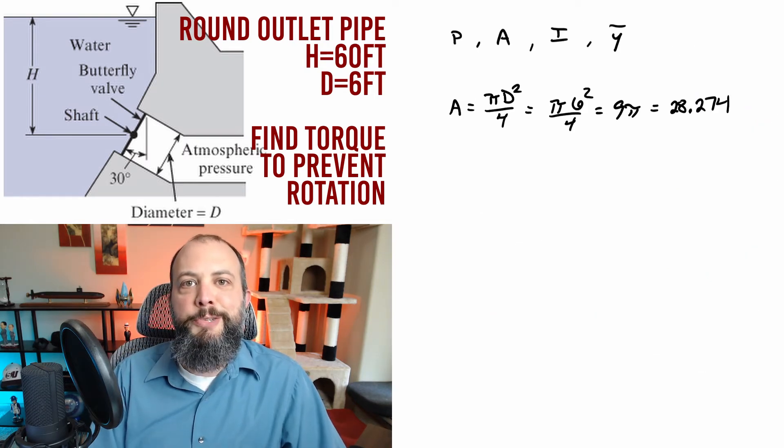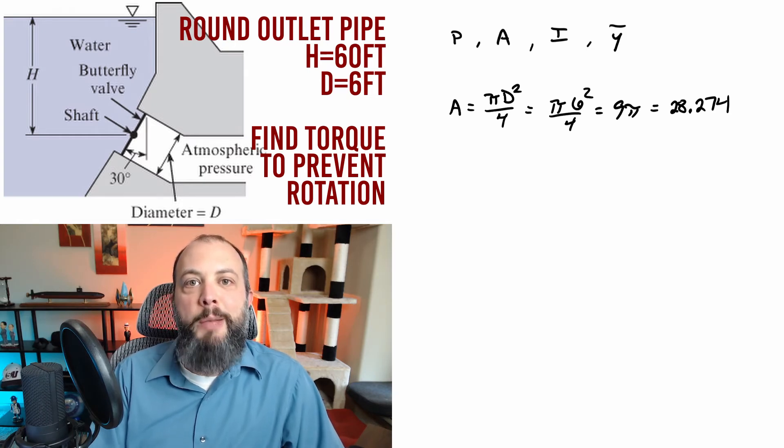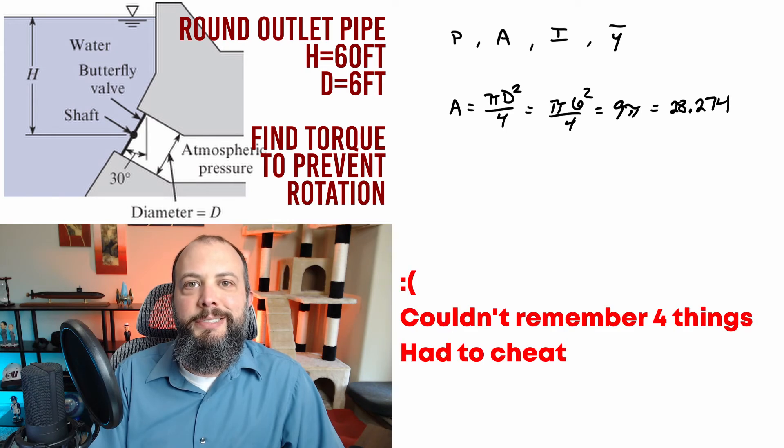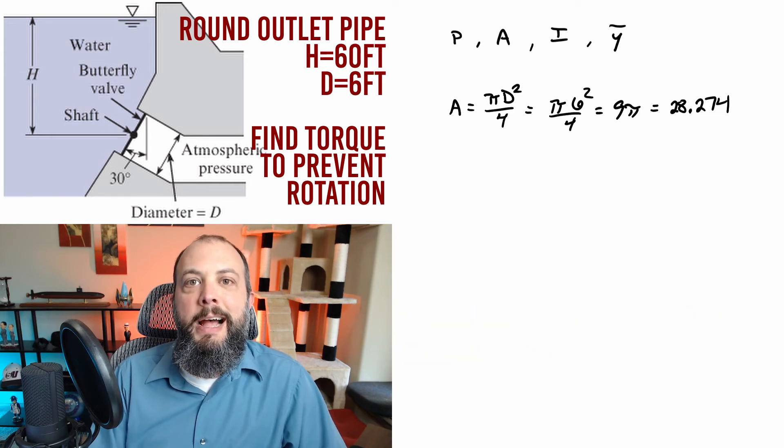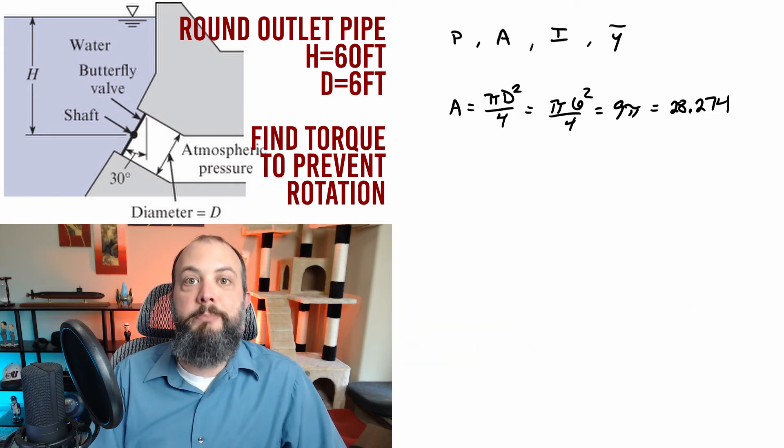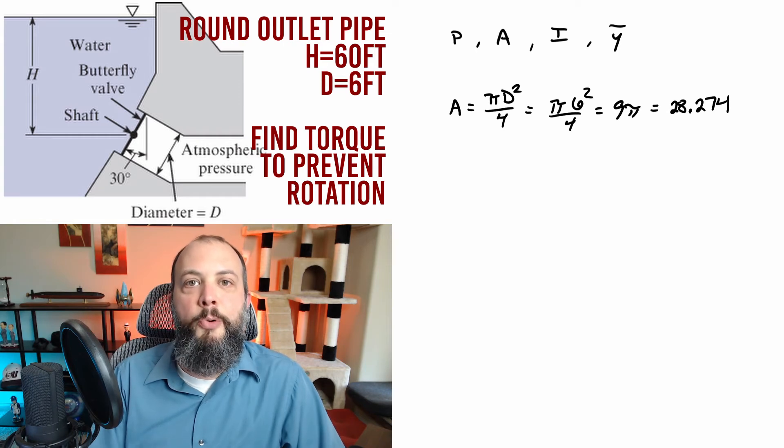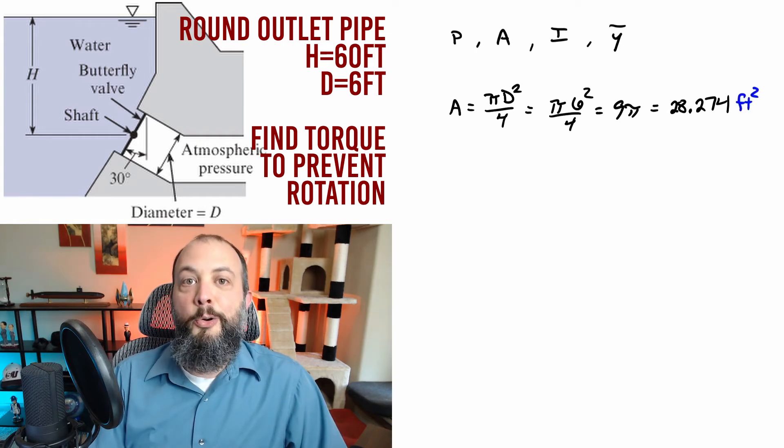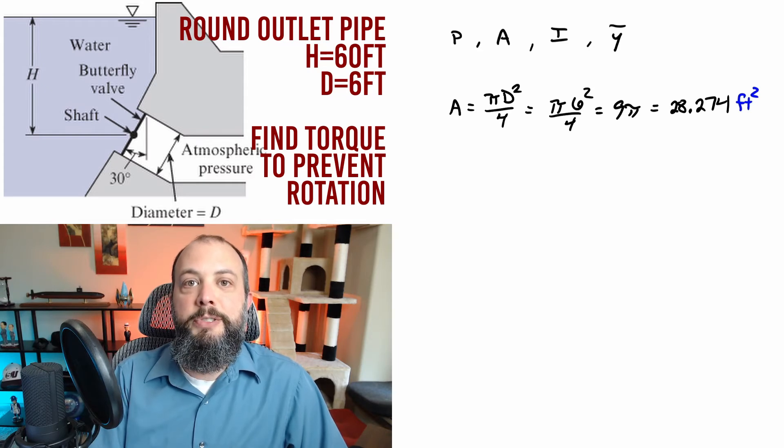I made a checklist of the four things we need to find: pressure at the centroid, area of the circle, Y bar being the slant distance, and I the moment of inertia. Easiest one first, area of a circle, pi d squared over 4, we get that value about 28. Always a good idea to include units to make sure that everything cancels out and your final answer is in the units you actually want.